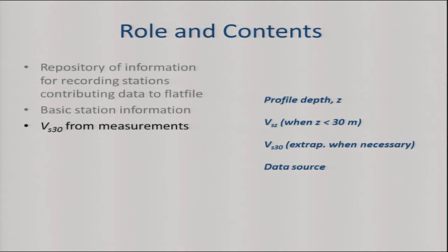It turns out you can extrapolate from VS15 to VS30 pretty well — there's not much sigma associated with that extrapolation. The way you do the extrapolation is a little different in different regions because of regional variations in crustal velocity gradients, and you need to take that into account. We've applied different protocols for extrapolation in different parts of the world, and when we have Z less than 30, we provide an extrapolated VS30.